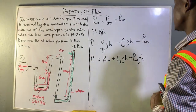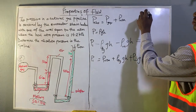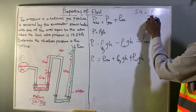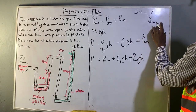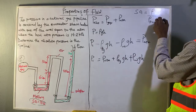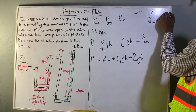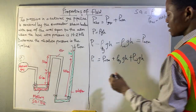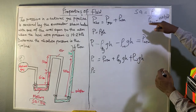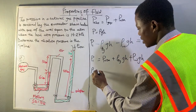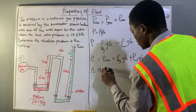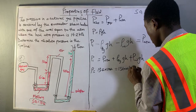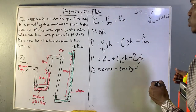We've been given vital information to calculate density. The specific gravity (SG) equals the density of the substance divided by the density of water, and the density of water is 1000 kg/m³. To find the density of mercury, we multiply SG by the density of water. The SG given is 13.6, so 13.6 times 1000 gives us 13,600 kg/m³.